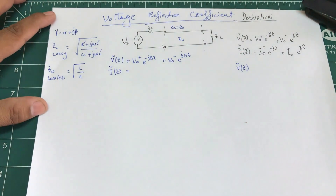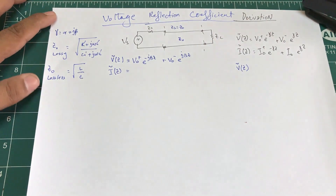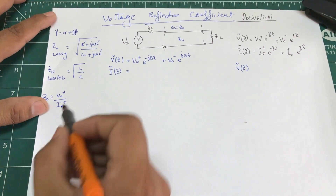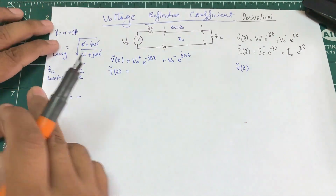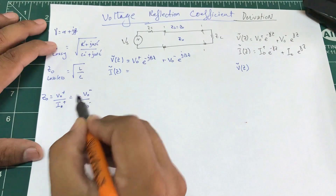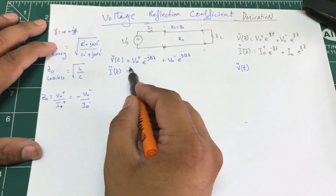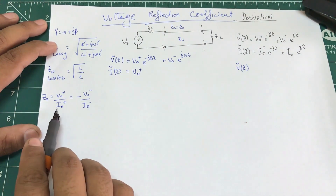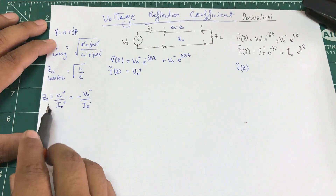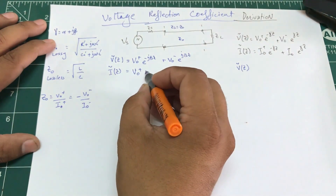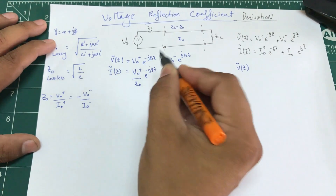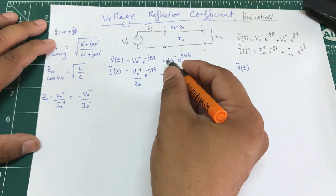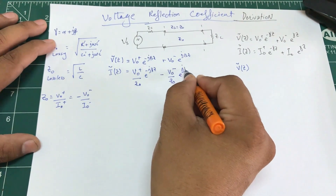Now for i(z), using the relationship that impedance is the ratio of incident voltage to incident current, we can write i(z) = (V0+ / Z0) * e^(-jβz) - (V0- / Z0) * e^(jβz). The negative sign indicates the direction of the reflected wave.